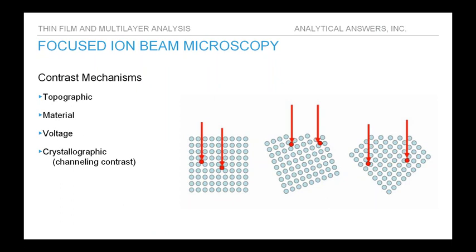The third contrast mechanism is voltage contrast, which is a change in secondary electron intensity based on local differences in surface potential caused by local differences in surface conductivity. We try to avoid this by coating samples with a very thin layer of conductive material, as is done in SEM analyses. However, voltage contrast is a very important tool for fault isolation in microelectronics, for instance by localizing the region of opens in circuit traces.